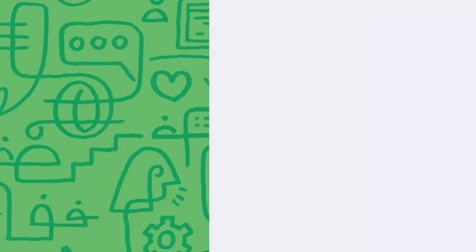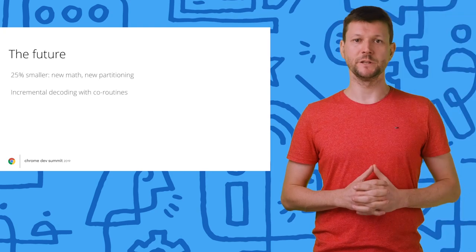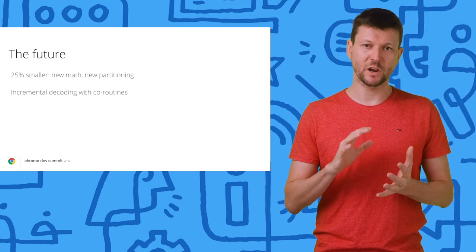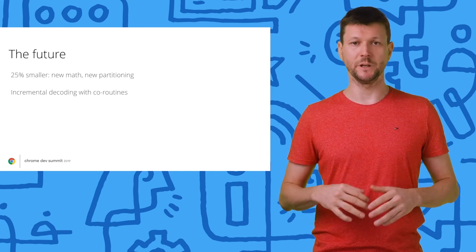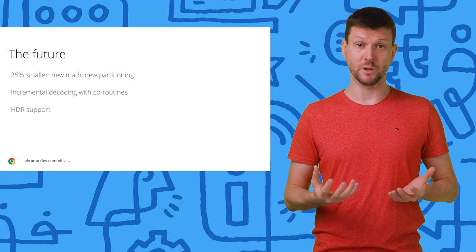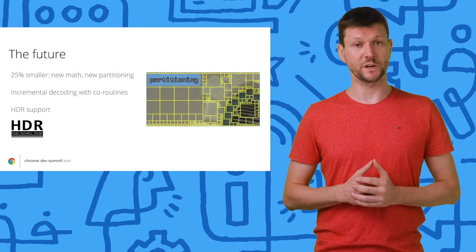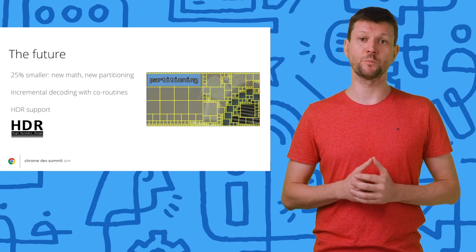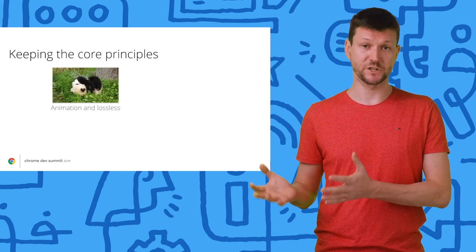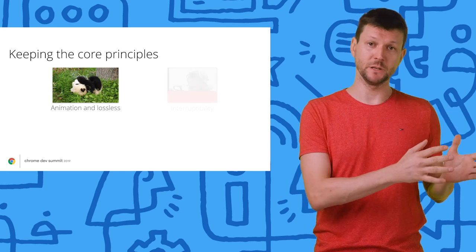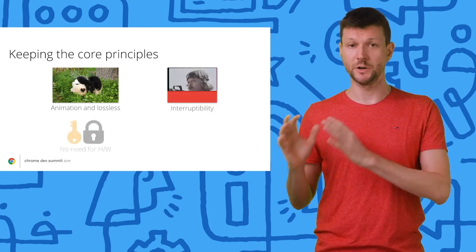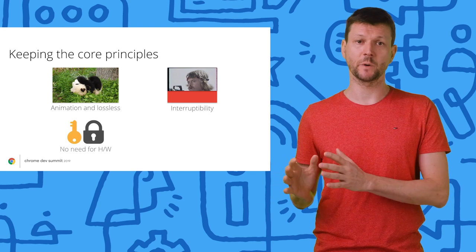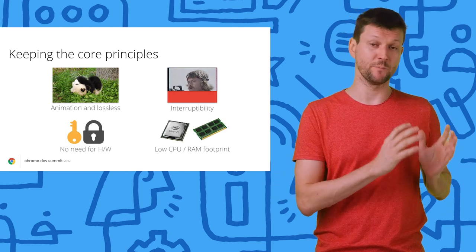Now that we've accomplished so much with WebP, what's next? As future work, we're exploring new algorithms that can bring an extra 25% size reduction, as well as a wider color space, hence enabling HDR display. Of course, we're keeping the features that make WebP a great compression format for the web: animation and lossless, interruptibility — meaning you can display something even if your image is not fully downloaded — no need for dedicated hardware, and low CPU and memory footprint.